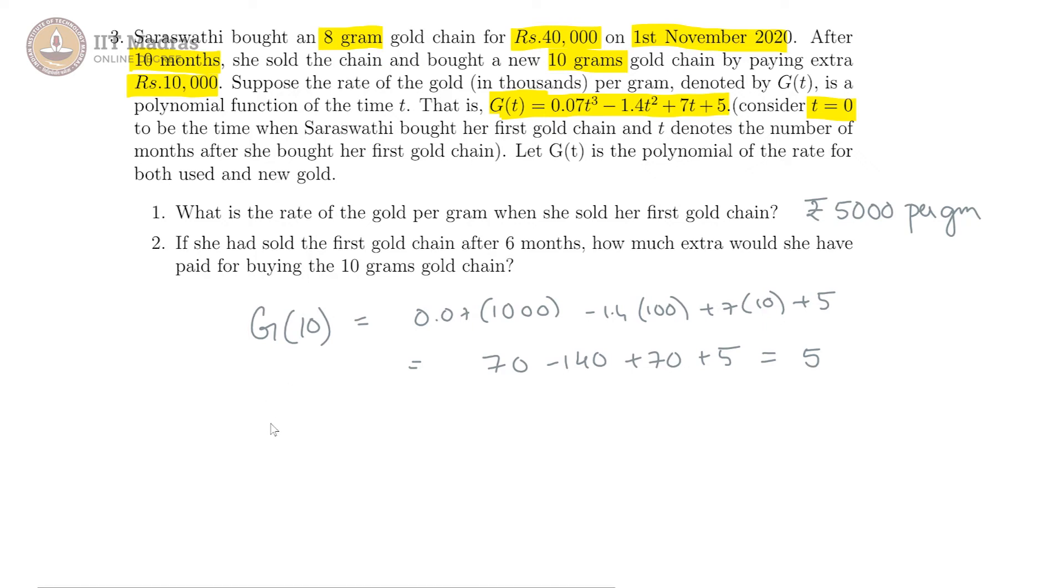we have to find the price, the rate. That would be g of 6, and that is 0.07 into 6 cube is 216 minus 1.4 into 36 plus 7 into 6 plus 5.